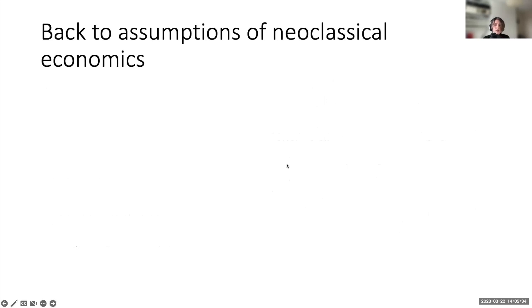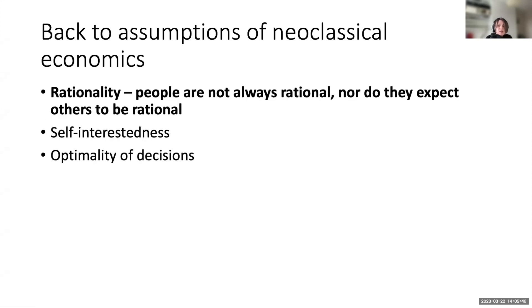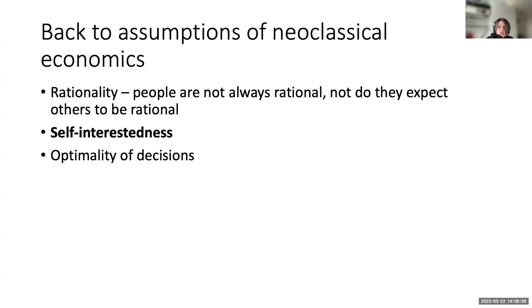Recall that the key assumptions of neoclassical economics regarding human behavior are rationality, self-interestedness, and the ability to make optimal decisions. We've already seen from Thaler's experiment that people are not always rational and nor do they expect others to be. Now I'd like to talk about the other key assumption — self-interestedness — and how experiments can test this assumption and inform economists of real human behavior.